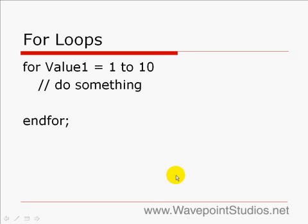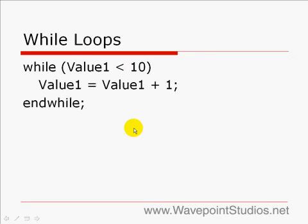For loops. It's pretty easy. You just say for value 1 equals 1 to 10. The variable, the increment, or the range, 1 to 10. You do something, and here's the end for. You can also do a while loop, while value 1 is less than 10. Value 1 equals value 1 plus 1, and then end while. That's how that works.